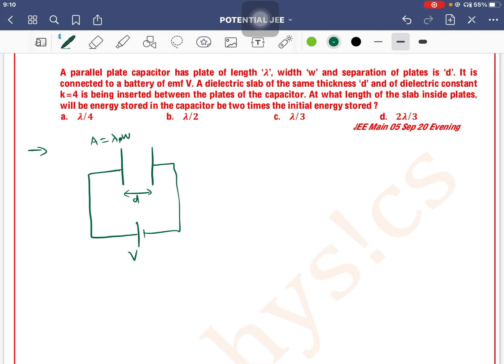A dielectric slab of the same thickness D and dielectric constant K equals 4 is being inserted between the plates of the capacitor. At what length of the slab inside the plates will the energy stored in the capacitor be 2 times the initial energy stored?